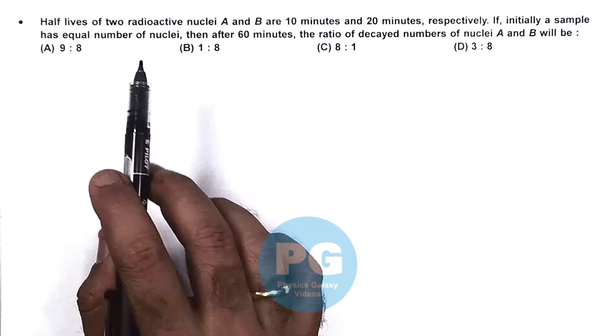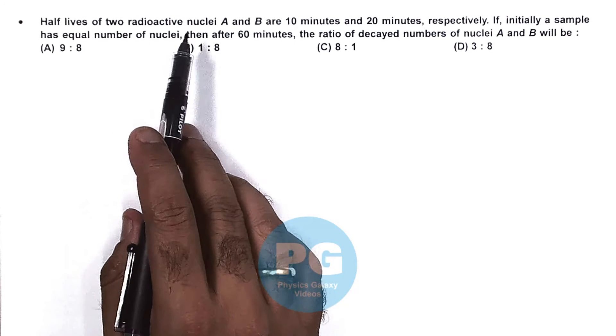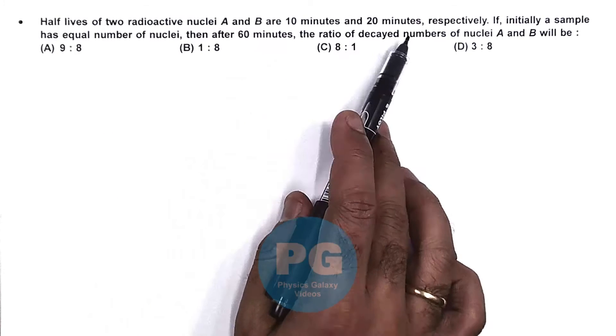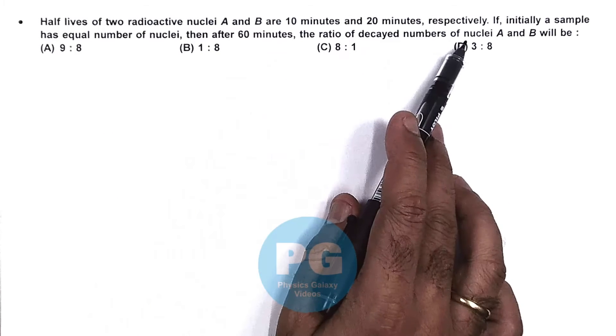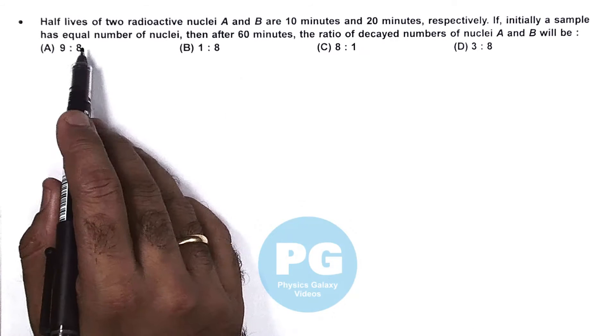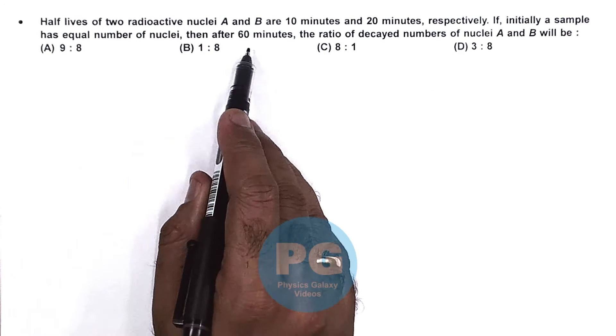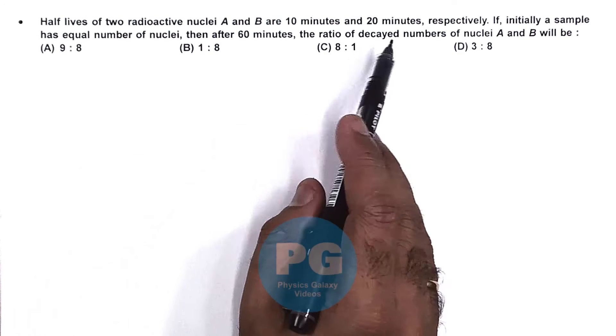In this question, it says half lives of two radioactive nuclei A and B are 10 minutes and 20 minutes respectively. If initially a sample has equal number of nuclei, then after 60 minutes the ratio of decayed numbers of nuclei A and B will be...